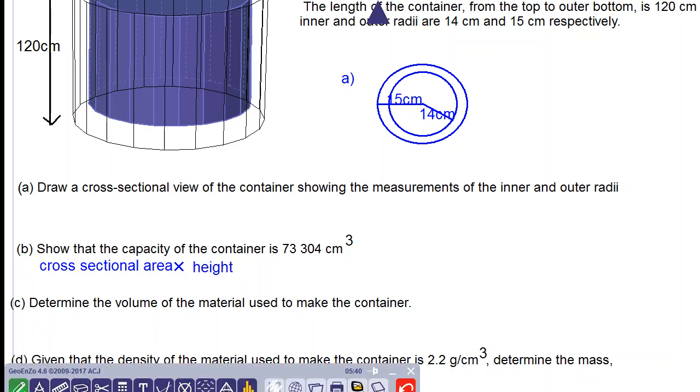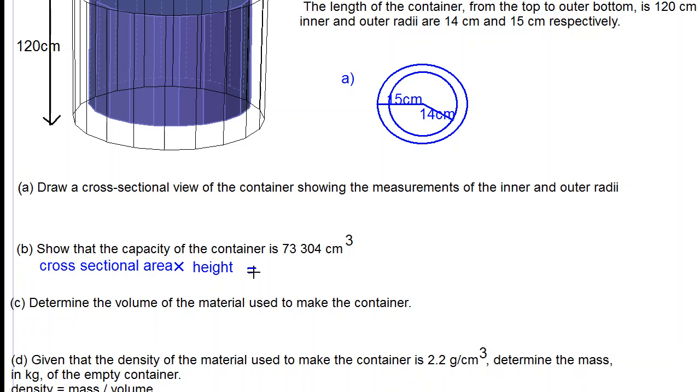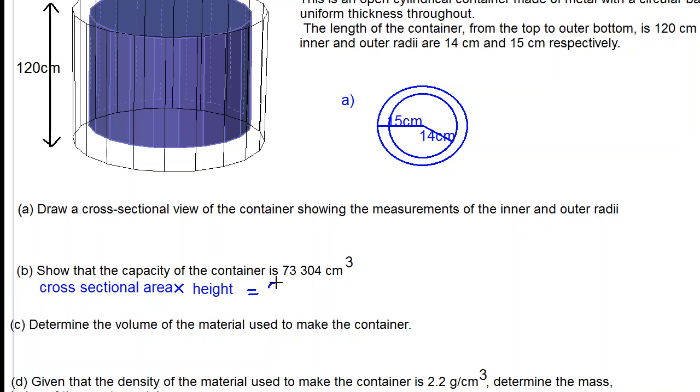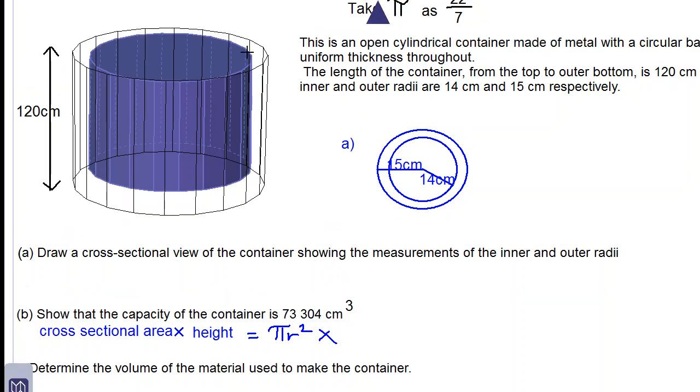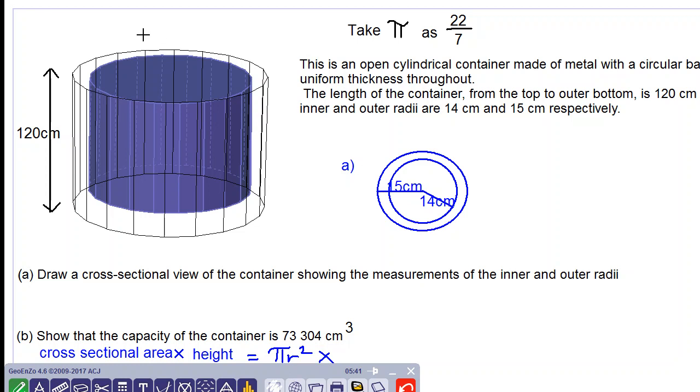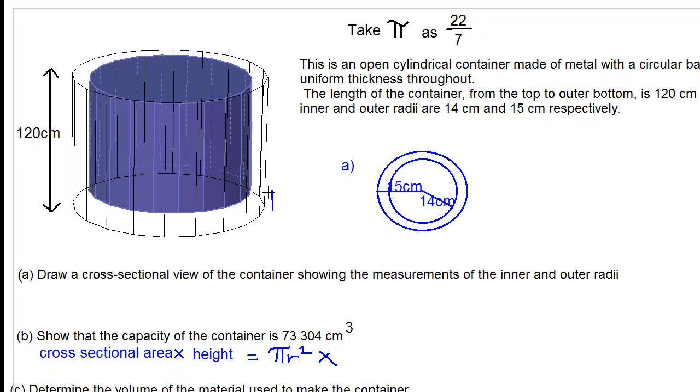The cross-sectional area would be π r² multiplied by the height, which is something we have to determine. If the thickness throughout is uniform, and if the difference between the inner radius and the outer radius is one centimeter, then the thickness has to be one centimeter below.